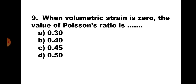Question number 9. When volumetric strain is 0, the value of Poisson's ratio is: A. 0.3, B. 0.4, C. 0.45, D. 0.5. Writing the formula for volumetric strain, since volumetric strain = 0, the term (1 − 2μ) = 0, which gives μ = 0.5. Hence, the correct answer is D: 0.5.